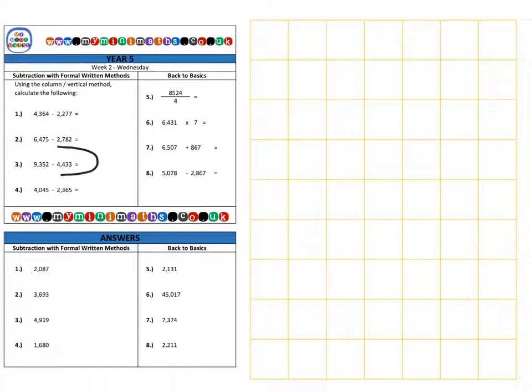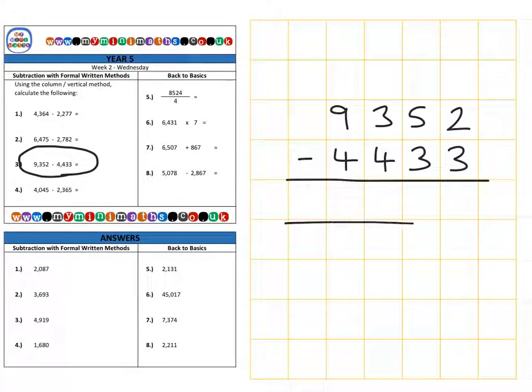Next, we're on to question three, which is 9,352, and we are subtracting 4,433. Starting in the units column, two subtract three we can't do. So we're going to borrow from the tens, the next column. So I borrowed one of those tens and brought it over to the units column. So now I have 12 subtract three, which is nine units.